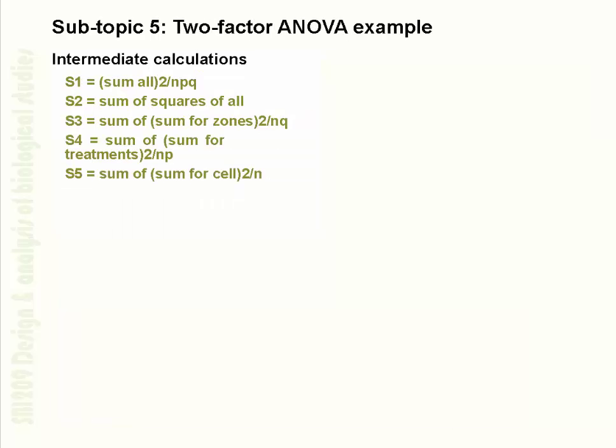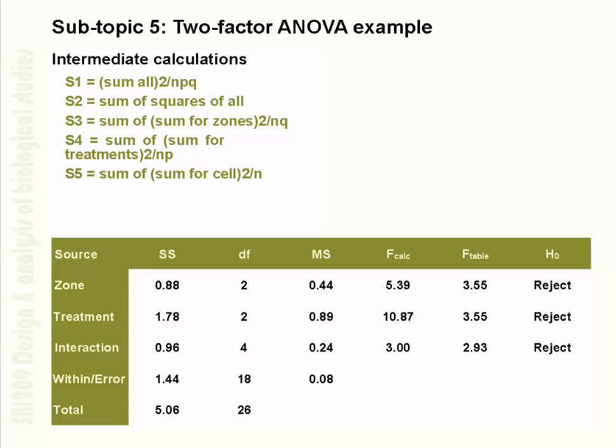If doing the calculations by hand, five S terms need to be calculated. For example, S2 is the sum of squares for all observations — every observation squared and added up across all 27 observations. The details are not covered in full here, but the SPI 209 statistical manual provides more detail on those calculations.